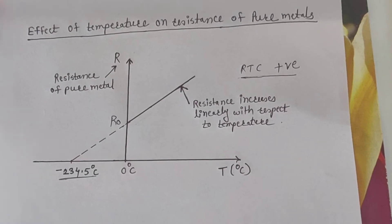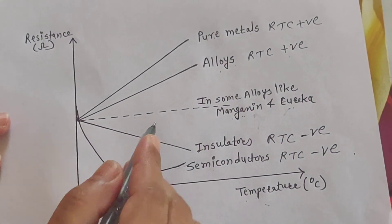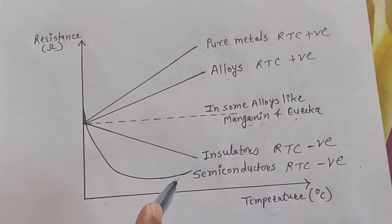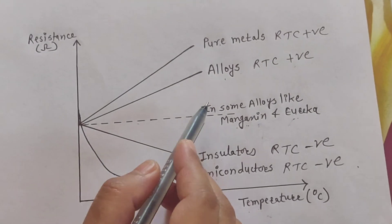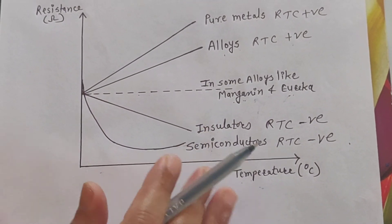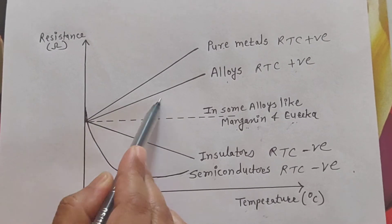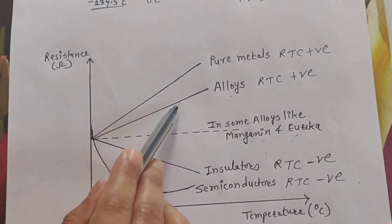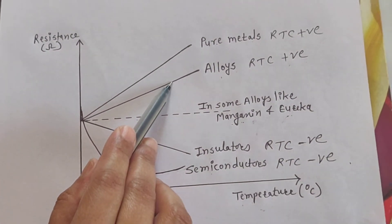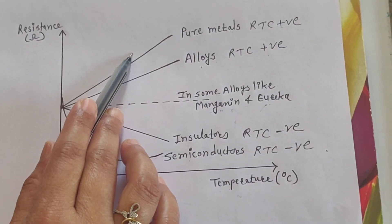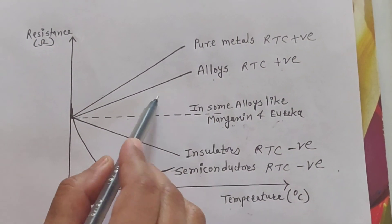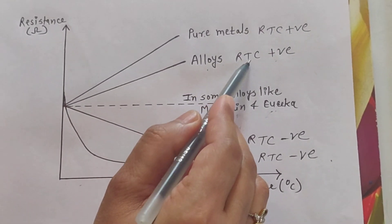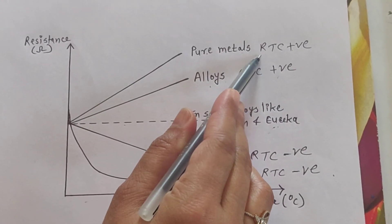Next is the effect of temperature on alloy. An alloy is a mixture of two or more materials. From the graph, alloy resistance goes on increasing with temperature, but that increase is small compared to pure metal. So for alloy, RTC is also positive, like pure metal.